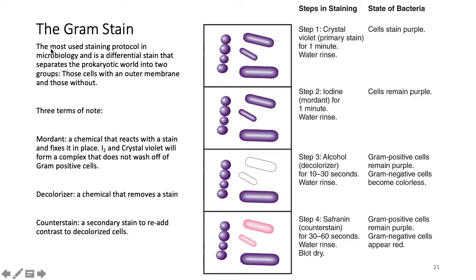The gram stain procedure: take a swab, smear it on a microscope slide, apply crystal violet, rinse with water, add iodine, rinse again, then add alcohol as a decolorizer. The purple dye washes off some cells. Gram-positive cells remain purple; gram-negative cells become colorless and must be counter-stained with safranin, which stains them pink.